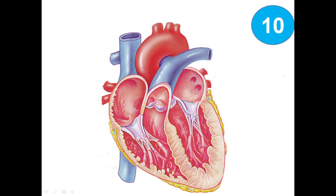Now this one is the last picture in which we can see the section of the heart. Let's talk about the four chambers — this one is the left atrium, this one is the right atrium, the upper two chambers. We got here the left ventricle and the right ventricle — the lower two chambers of the heart.